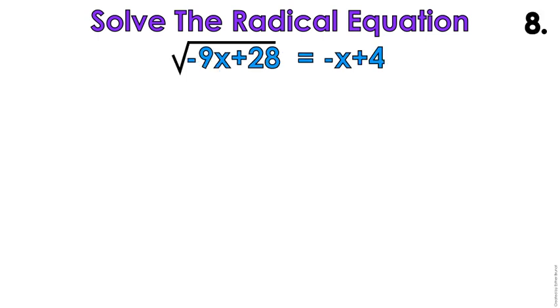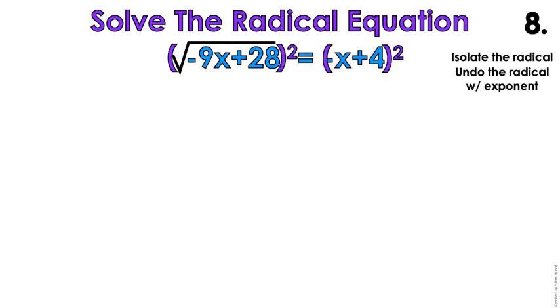Last example! Okay, so we're gonna do example number 8. Isolate the radical. It's isolated. I love that for me. Let's undo the radical with an exponent. It's a square root, so we're gonna square both sides. I'm gonna get negative 9x plus 28 equals negative x plus 4 times negative x plus 4. Not x squared plus 16. You gotta distribute.